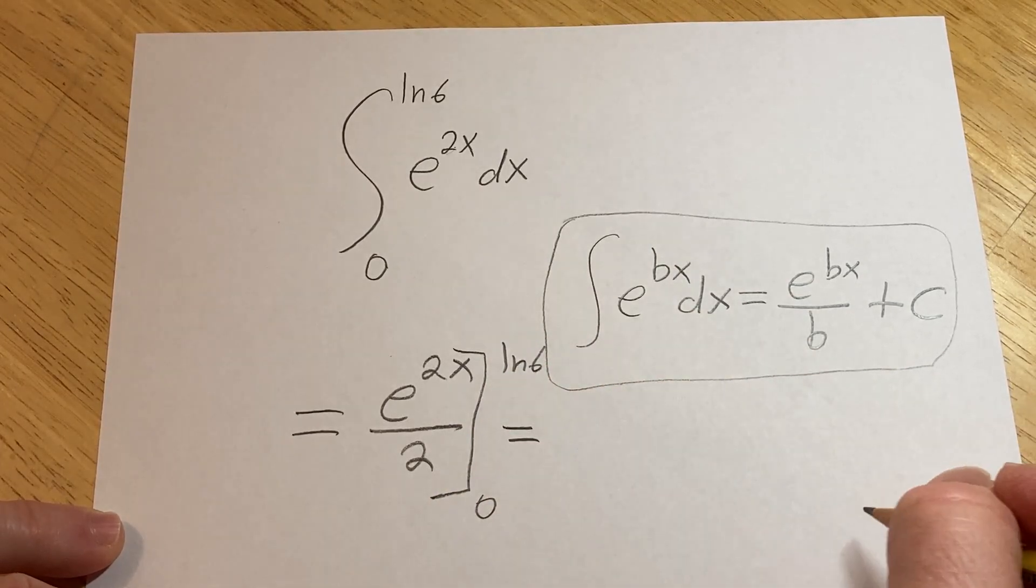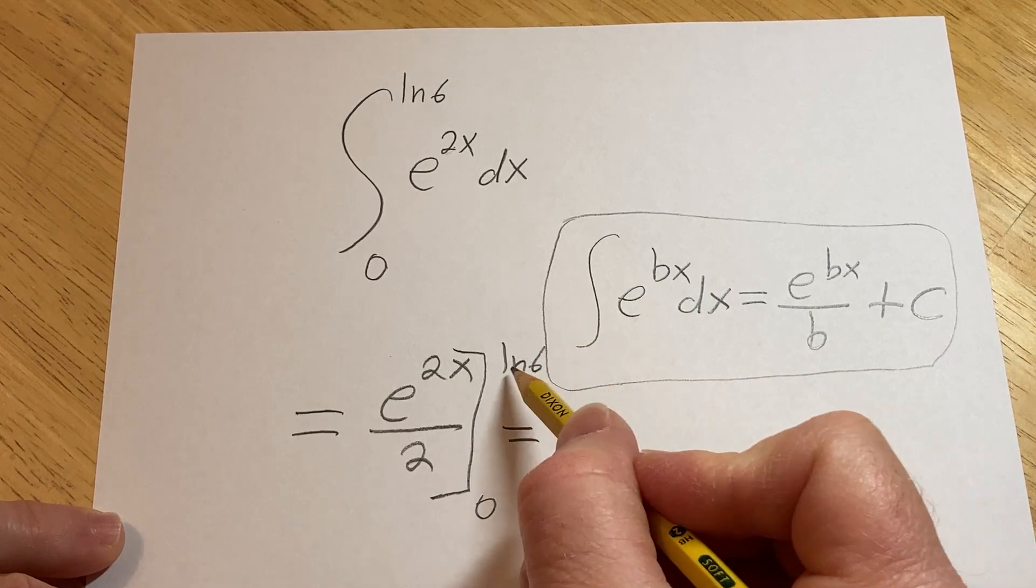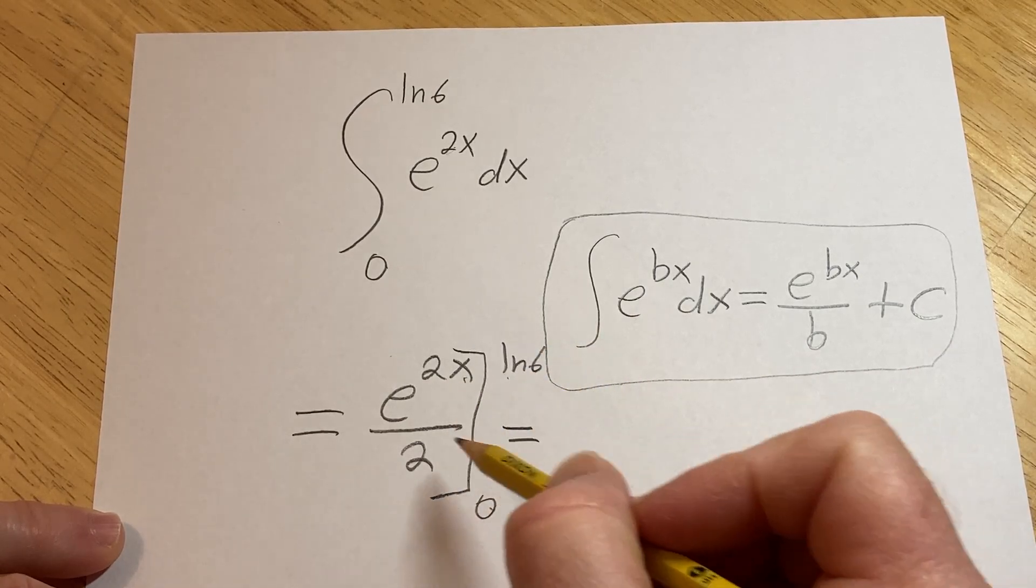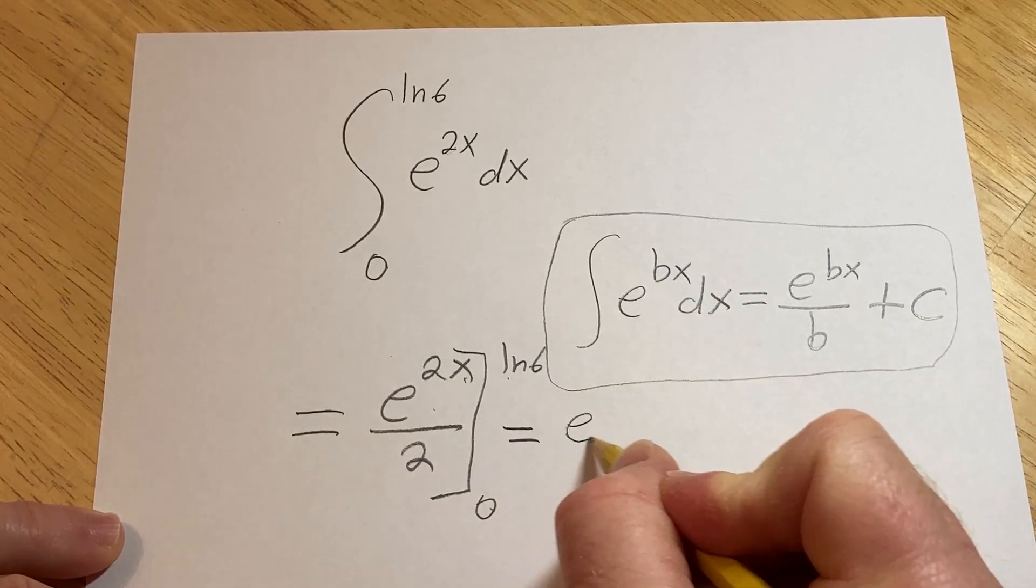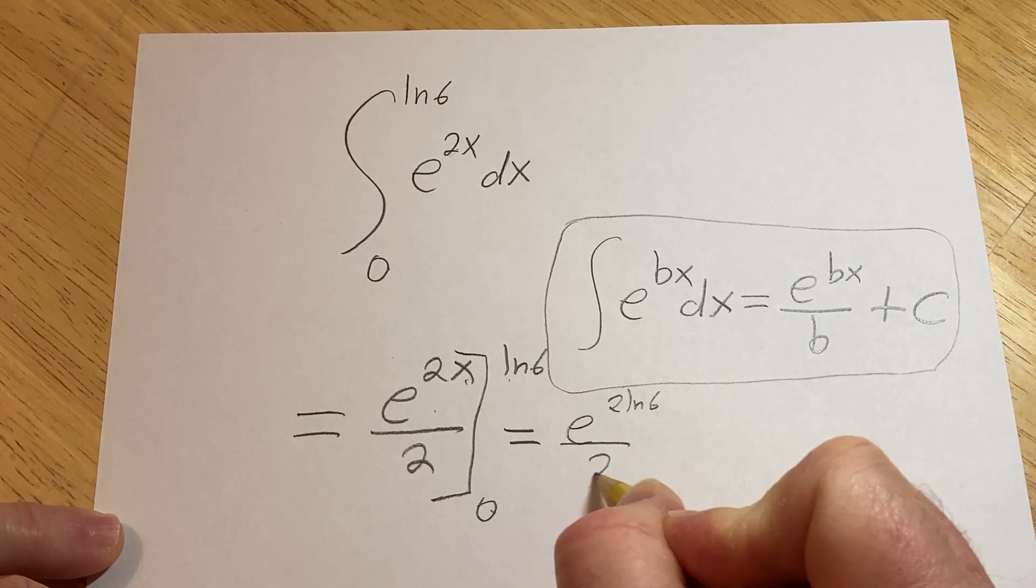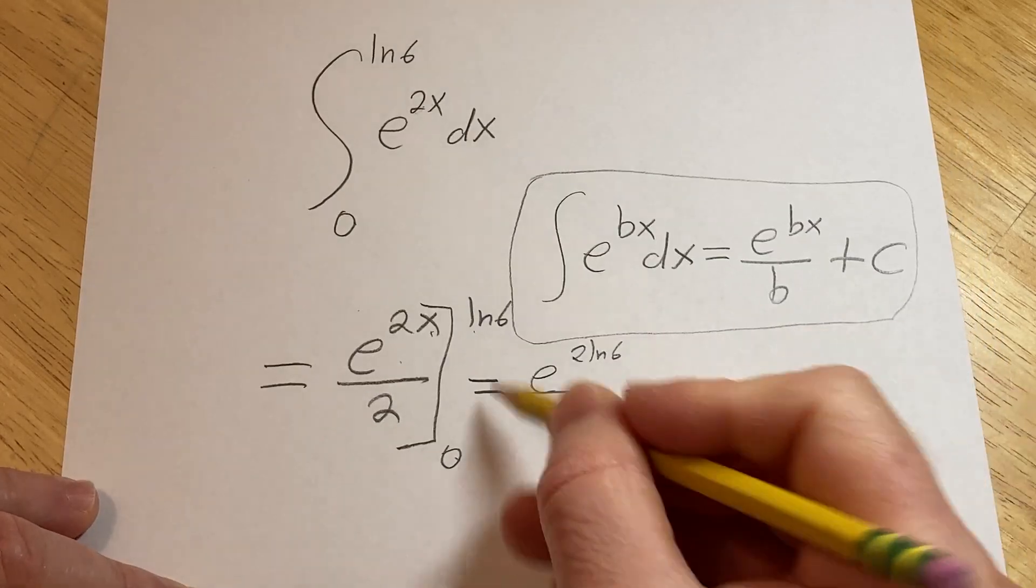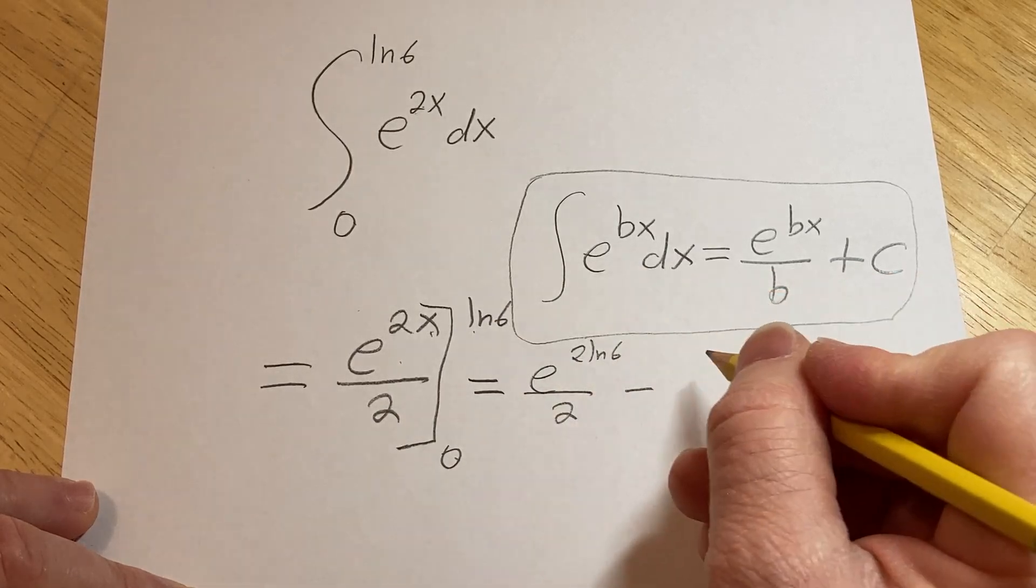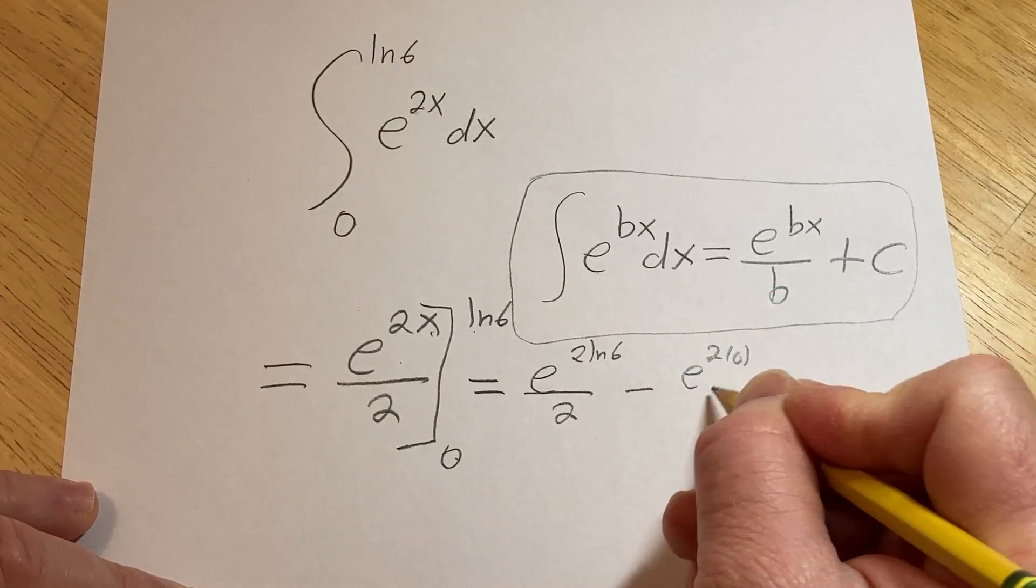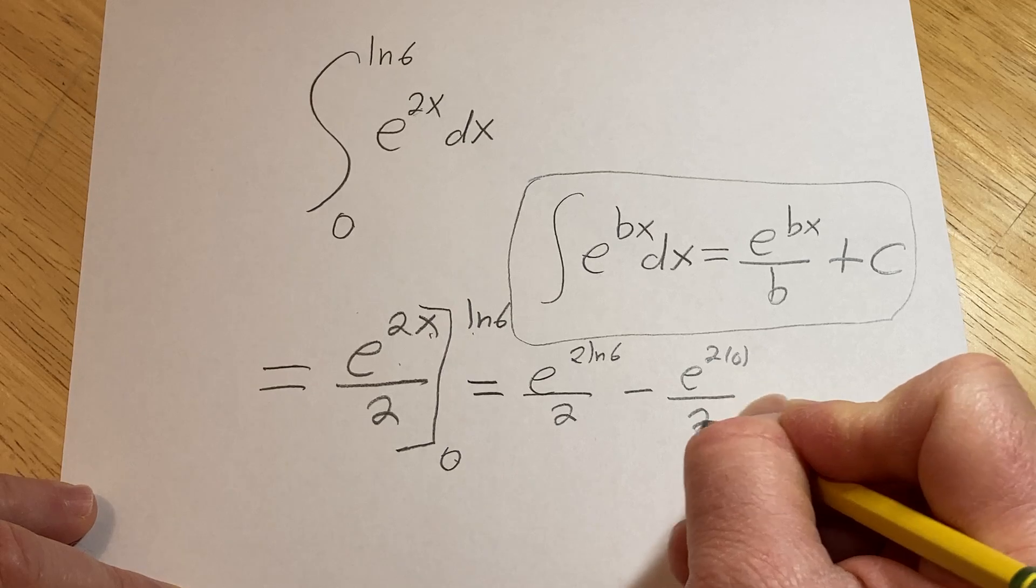So this is equal to, the rule is you first plug in the top number, and then you plug in the bottom number. So we get e to the 2 ln 6 over 2 minus, and then plugging in the 0, we get e to the 2 times 0 over 2.